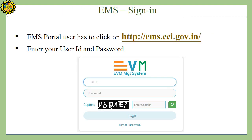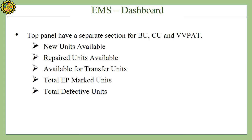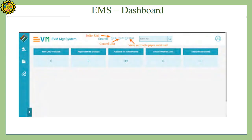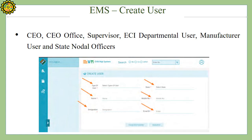EMS Sign In: The EMS portal web address is shown on the screen. Users must enter their user ID and password. The EMS Dashboard top panel has separate sections for BU, CU, and VVPAD, showing new units available, repair units available, units available for transfer, total EP marked units, and total defective units. Users that can be created on EMS include CEO, CEO Office, Supervisor, ECI Department User, Manufacturer User, and State Nodal Officers.